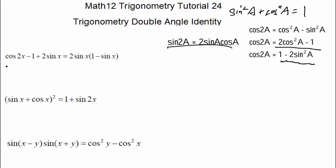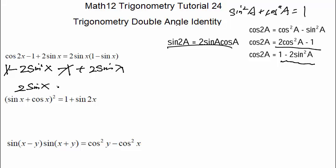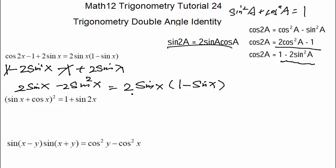Using cosine 2x = 1 minus 2 sine²x: we get (1 minus 2 sine²x) minus 1 plus 2 sine x. The 1's cancel, leaving minus 2 sine²x plus 2 sine x. We factor out 2 sine x to get 2 sine x times (1 minus sine x), and we're done.